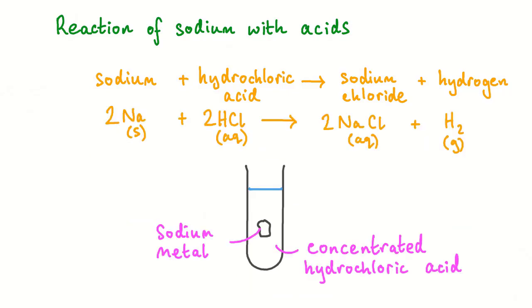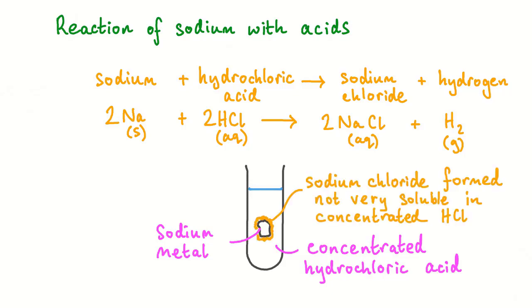The reaction of sodium metal and concentrated hydrochloric acid is not as violent as may be expected. In this case, the sodium chloride formed is not very soluble in the concentrated acid. It forms a barrier between the sodium metal and the concentrated acid, preventing any further reaction occurring.